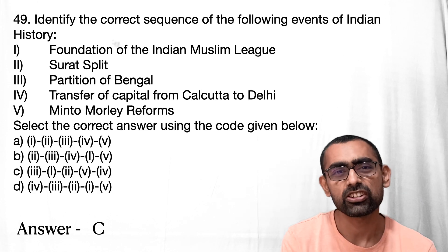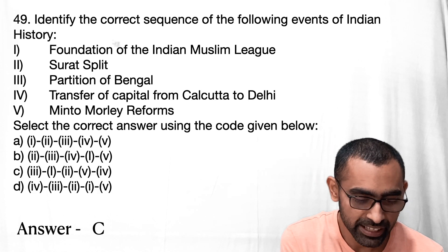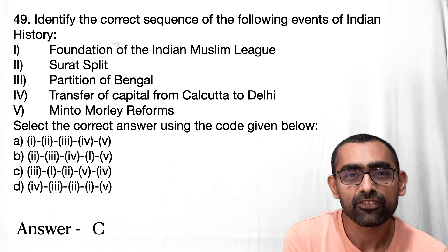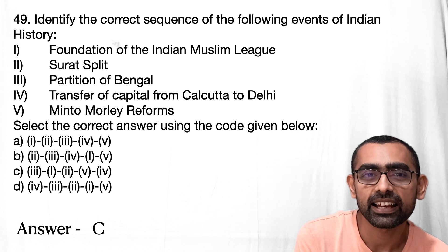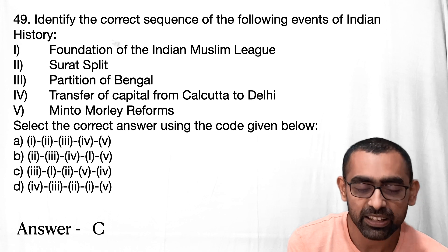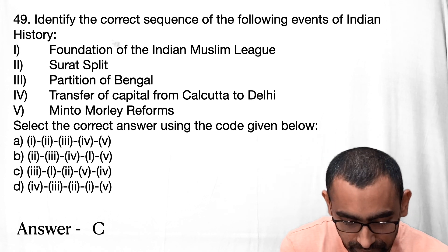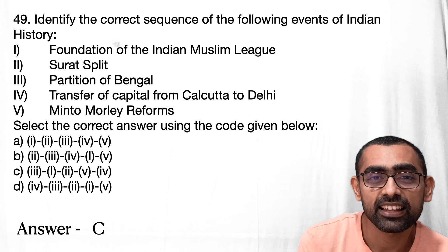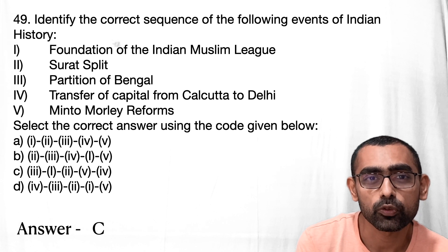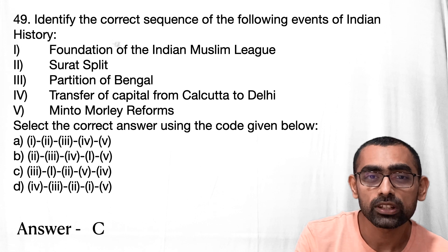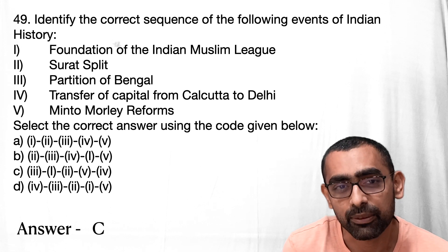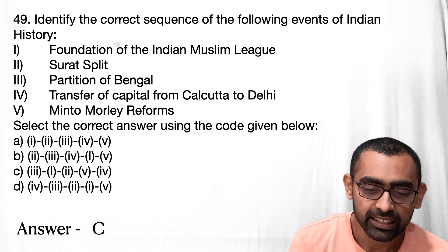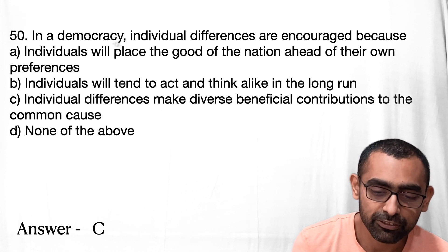Question 49 is a direct question from modern history where you have to arrange events in order of occurrence. While exams are becoming more conceptual, chronological knowledge of historical events is very important for correct logical understanding and sequencing. The answer here is option 3.